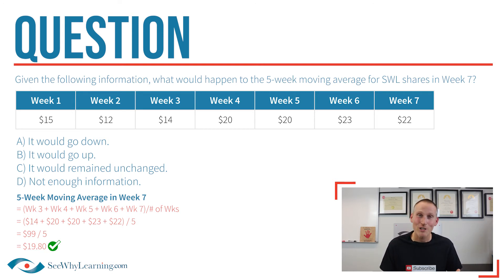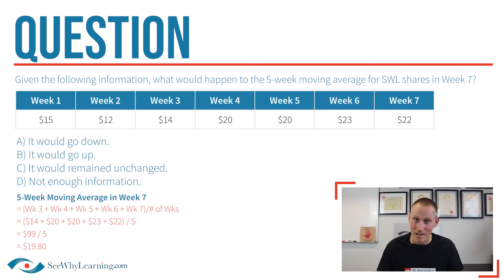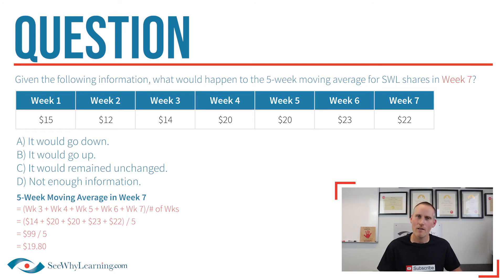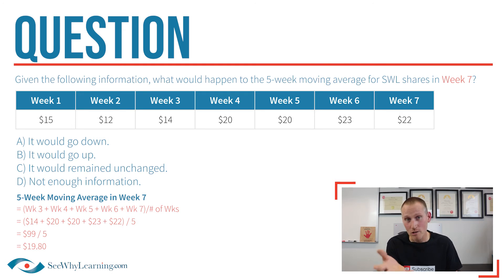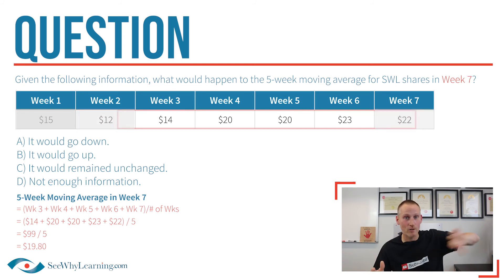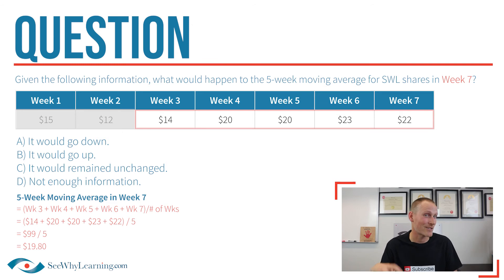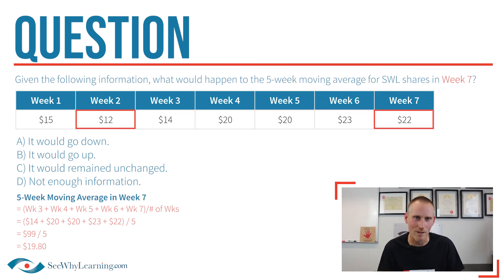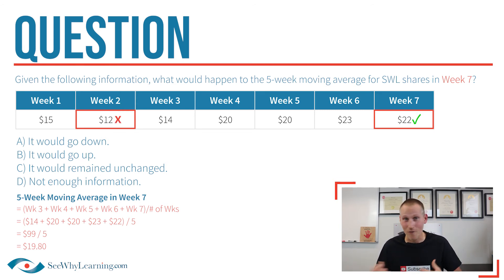With that being said, the question isn't actually asking us what the moving average price is — it's asking us what happens to the average in week seven. By understanding the concept, you could actually get this mark without doing much math at all. Just look at the numbers. The five-week moving average in week six would have included the prices from week two to week six. Once we get to week seven, the week two price drops off and the week seven price is included. Week two is $12 and the week seven price is $22. If you drop a 12 out of an average and replace it with a 22, the average is going to go up.